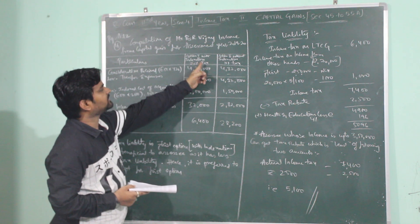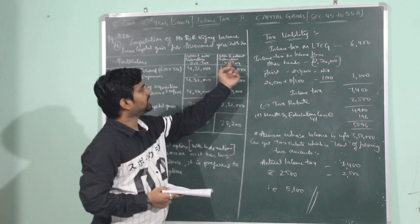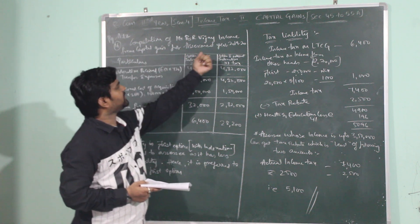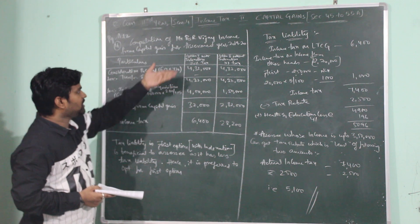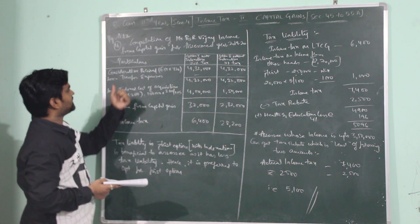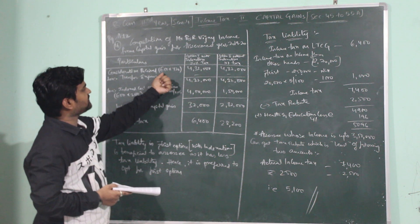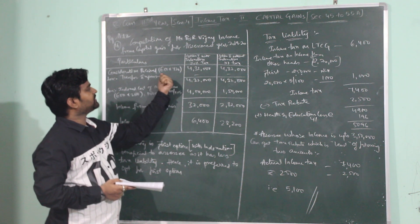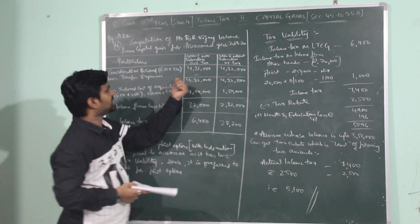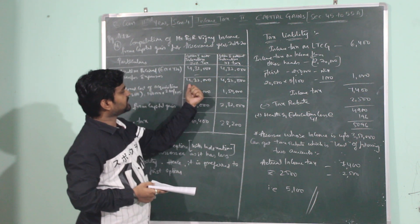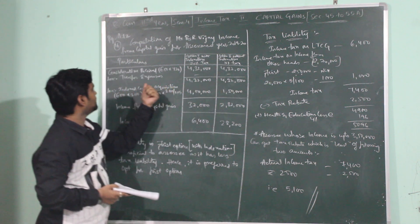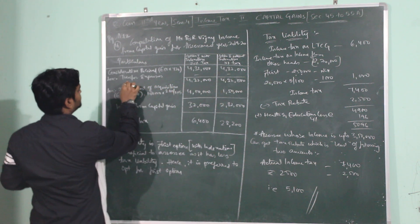Here is the heading: Computation of Mr. Vijay income from capital gain for assessment year 2019-2020. Here is the format: particulars, Option 1 with indexation 20% tax, Option 2 without indexation 10% tax. Now the consideration received: He is selling 600 shares at 720 each, 600 into 720. The consideration received will be 4,32,000. Less transfer expenses are not specified hence it is taken as nil. Net consideration is 4,32,000.